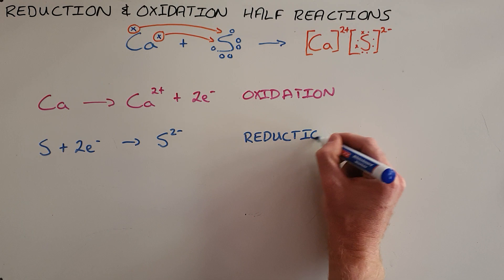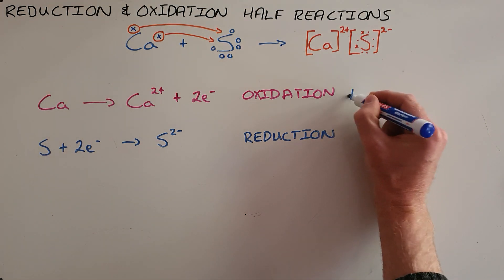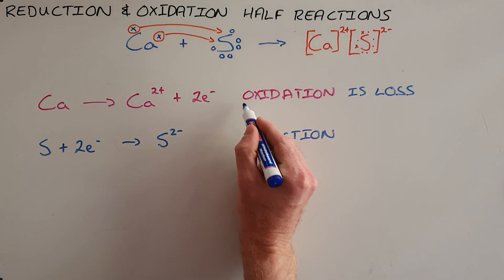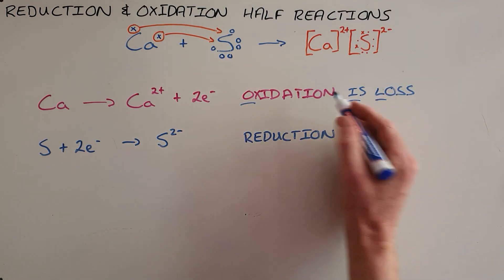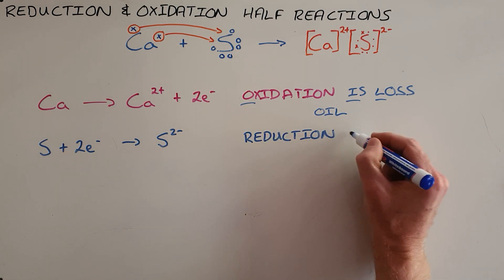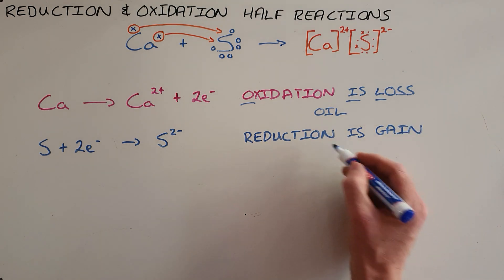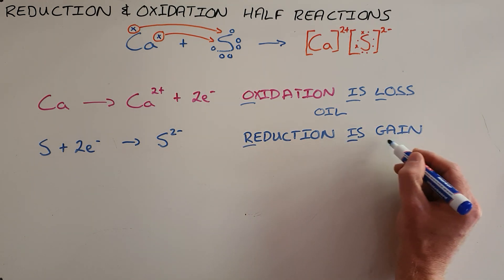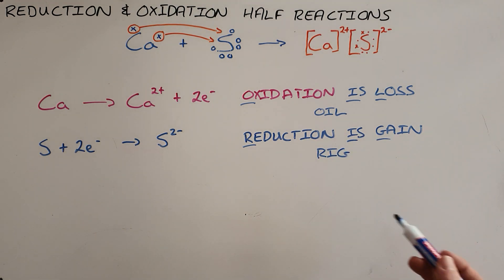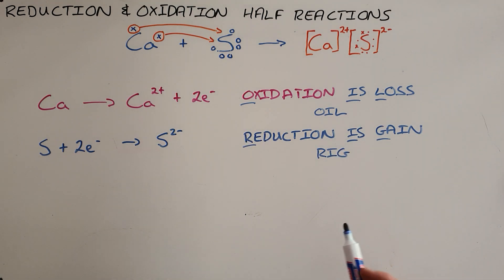There is an easy way to remember this: oxidation is loss, which we can simplify to OIL — oxidation is loss — and reduction is gain, referring to the electrons, and that can be simplified to RIG. So the common term OIL RIG helps us to remember that oxidation is loss and reduction is gain.